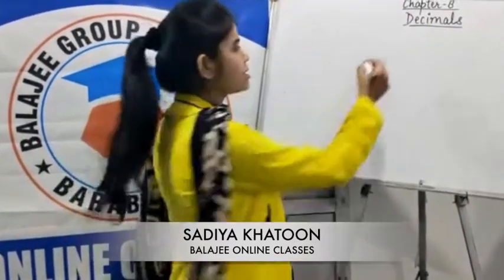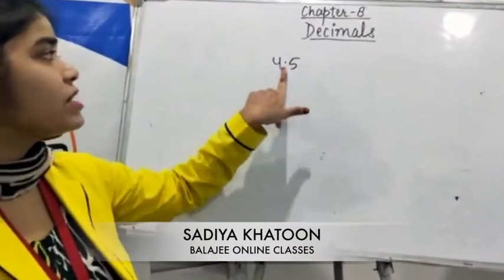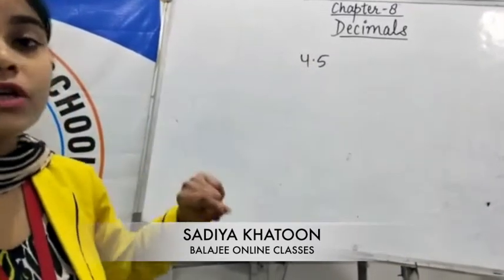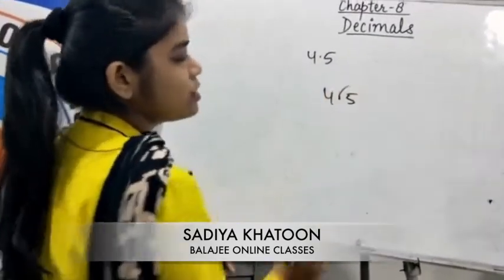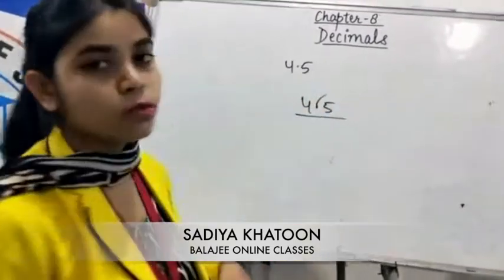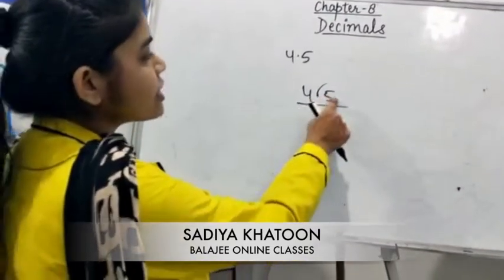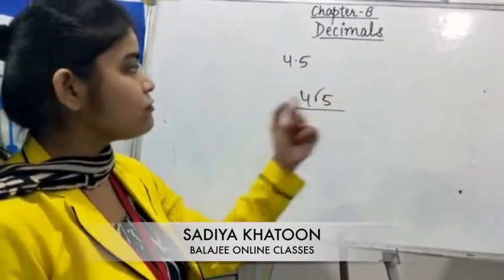If you have to represent a decimal as a fraction in the simplest form, here is how you do it. Suppose I take the example 4.5. This is a decimal number. To convert it into a fraction, you remove the decimal point, and keep in mind that after the decimal there is only one digit, which is 5.